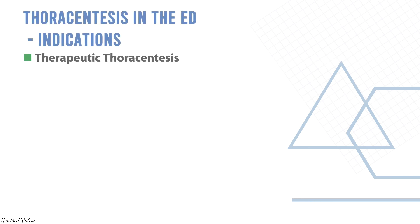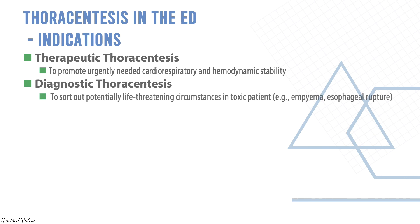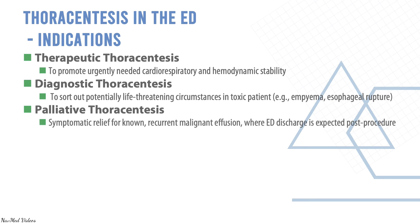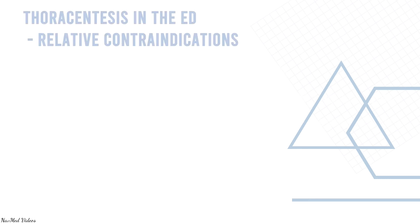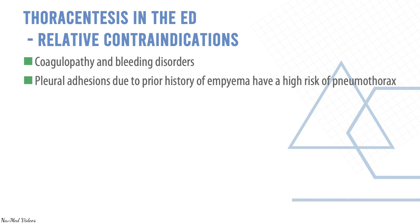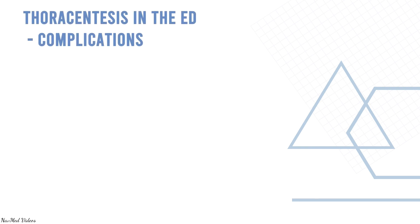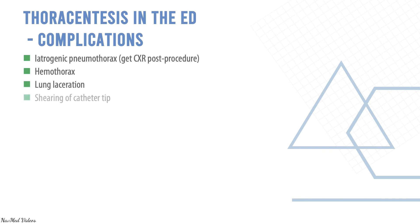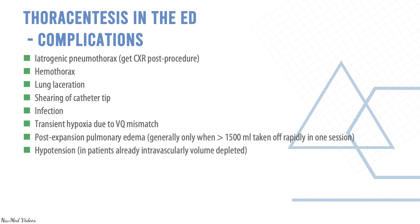Therapeutic thoracentesis promotes urgently needed cardiorespiratory and hemodynamic stability. Diagnostic thoracentesis is to sort out potential life-threatening circumstances in the toxic patient. Palliative thoracentesis provides symptomatic relief. Contraindications include coagulopathy, bleeding disorders, and pleural adhesion due to prior history of empyema, which carries a high risk of pneumothorax. Complications include iatrogenic pneumothorax, hemothorax, lung laceration, shearing of the catheter tip, infection, transient hypoxia due to ventilation-perfusion mismatch, post-expansion pulmonary edema, and hypotension.